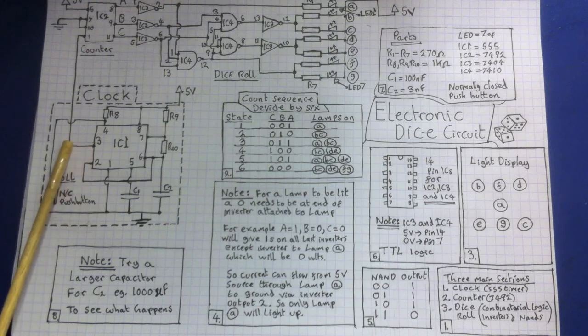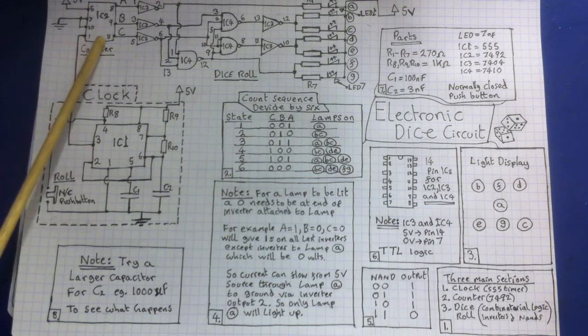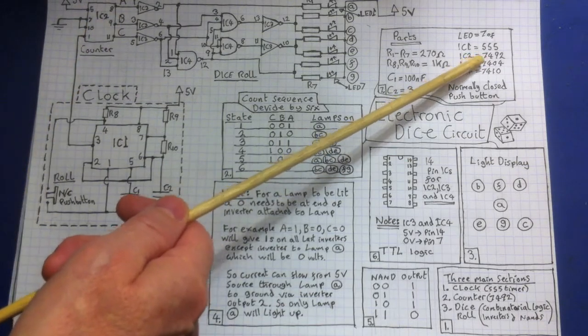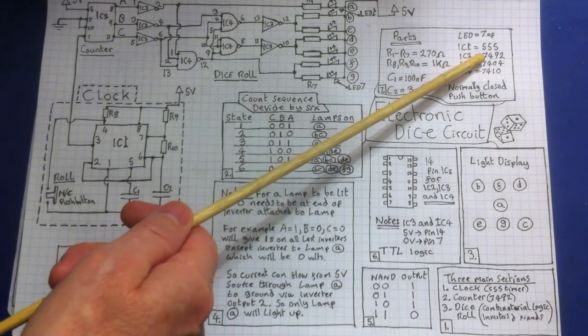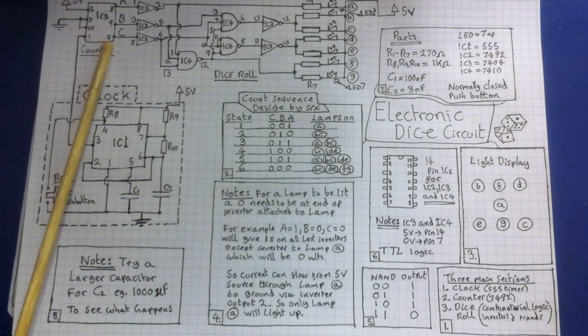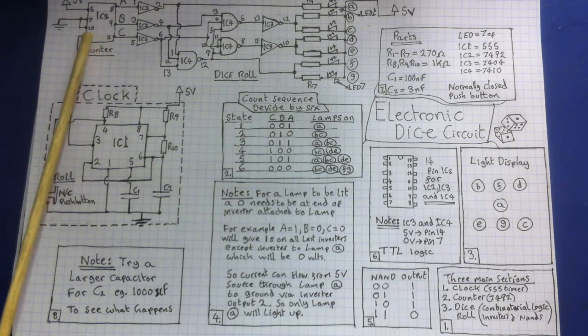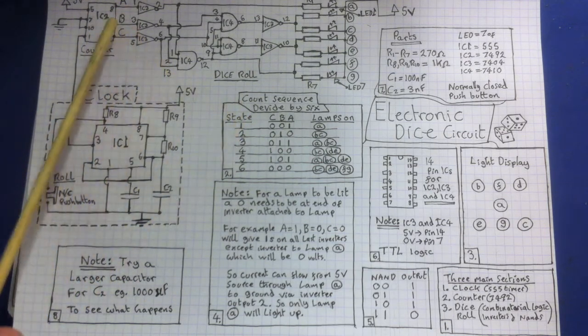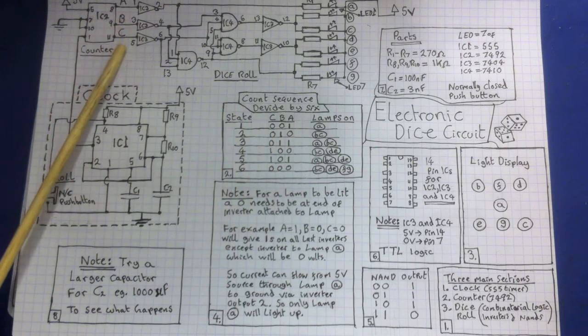So that feed there from the 555 timer goes into what's called a counter chip here. And this chip is a TTL logic and it's from the 74 family and it's called the 7492. So what does the counter do? Well the counter on every clock pulse here, out of these outputs A, B and C, you're going to have these values. So it's a binary counter.